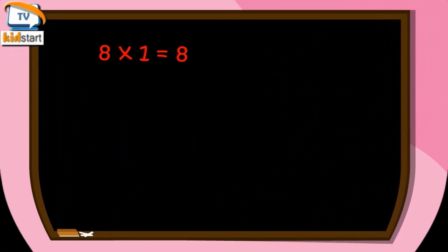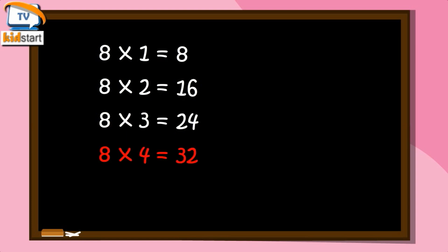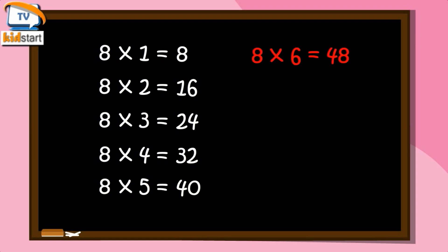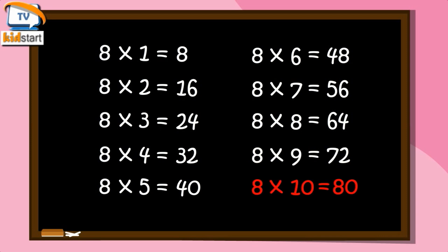Eight ones are eight. Eight twos are sixteen. Eight threes are twenty-four. Eight fours are thirty-two. Eight fives are forty. Eight sixes are forty-eight. Eight sevens are fifty-six. Eight eights are sixty-four. Eight nines are seventy-two. Eight tens are eighty.